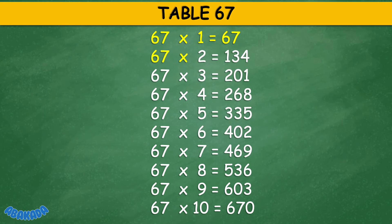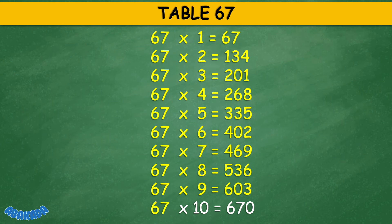Table 67: 67 times 6 equals 402, 67 times 7 equals 469, 67 times 8 equals 536, 67 times 9 equals 603, 67 times 10 equals 670.